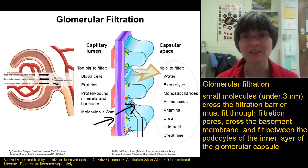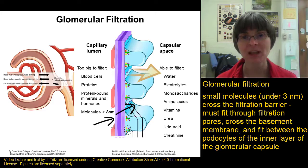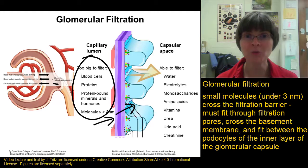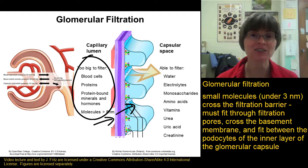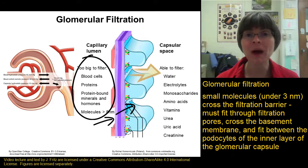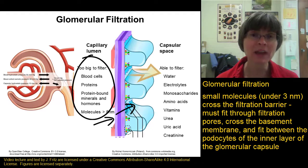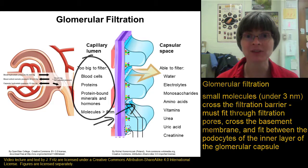Large things have to stay in the glomerular capillaries. This includes things like blood cells, as well as our plasma proteins — fibrinogen, clotting factors, and things like that. Any molecules that are bound to proteins, anything bound to albumin or to one of the alpha or beta globulins, is going to remain in the capillaries as well.